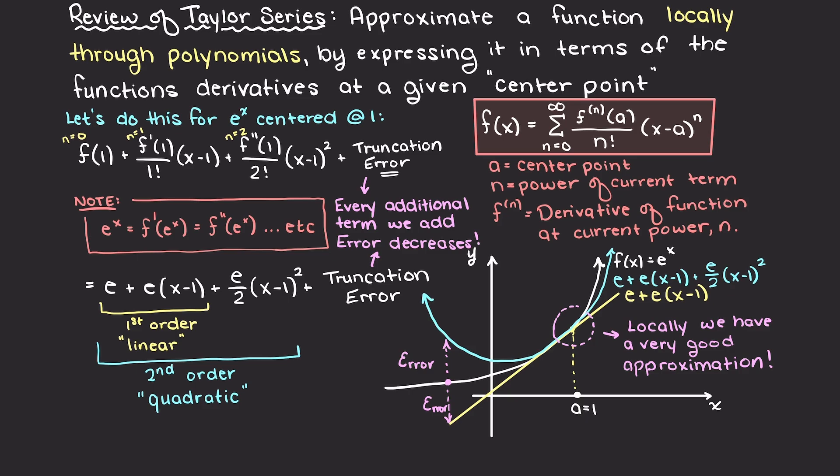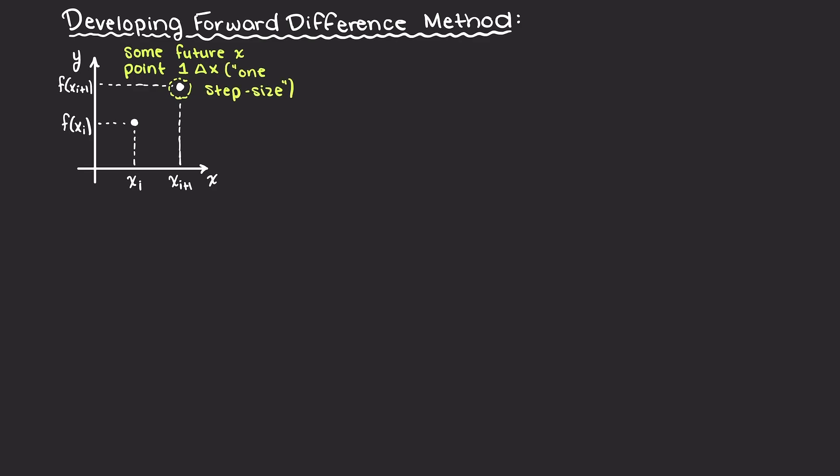So, now that we have reviewed Taylor series approximations, how does this help us understand the error of our forward difference method? Well, let's begin by writing out a couple terms of the Taylor series expansion for some future x point slightly ahead of our current data point, that is our step size, how big of a step our secant line is traveling between points. Remember, the closer that these points are, the better our approximation. Here I am using xi to denote the center point of our Taylor series expansion and xi plus 1 as our future data point that is some finite distance away.